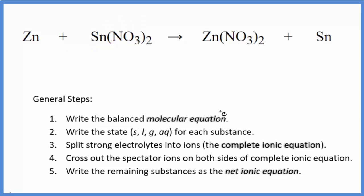First thing we need to do with net ionic equations is balance the molecular equation. This one is already balanced. We have two nitrates here and two nitrates here. If those are balanced, then we have a zinc on each side and a tin on each side. That's the molecular equation.